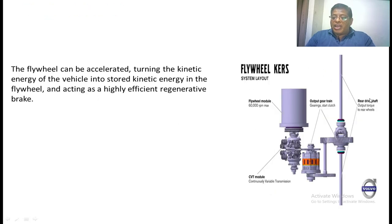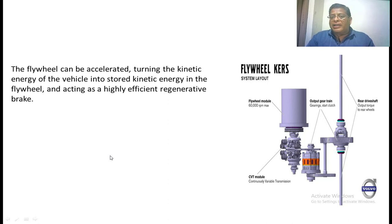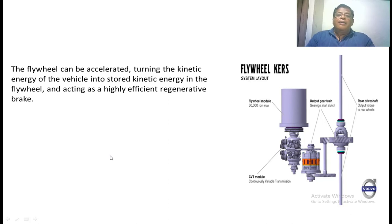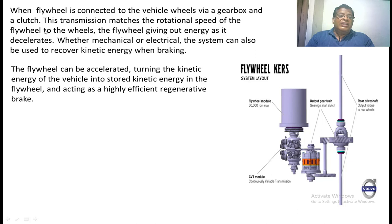This is a practical flywheel setup with a red drive shaft, two wheels, and a differential connected to the flywheel mechanism. The flywheel is placed inside a chamber to reduce friction losses during rotation. To further reduce friction losses, the flywheel is kept in a vacuum chamber. The flywheel is also supported by bearings, but bearings introduce friction losses. To reduce bearing losses, we can use magnetic levitation for the flywheel, and research on magnetic levitation is currently ongoing. The flywheel is connected to the vehicle wheel via a gearbox or clutch, and the transmission matches the rotational speed of the flywheel to the wheel.